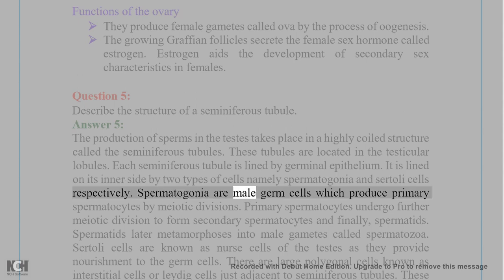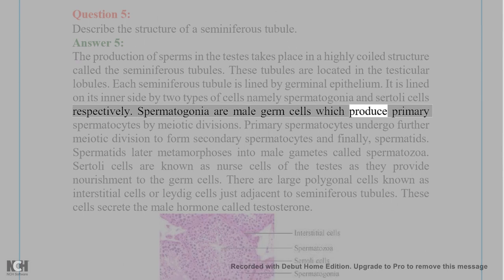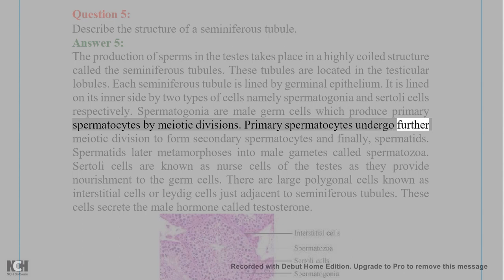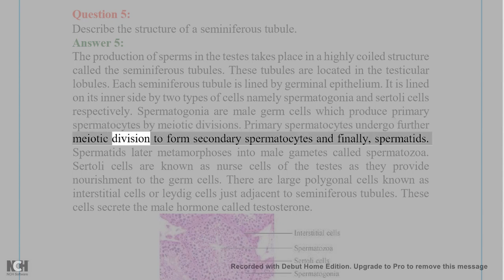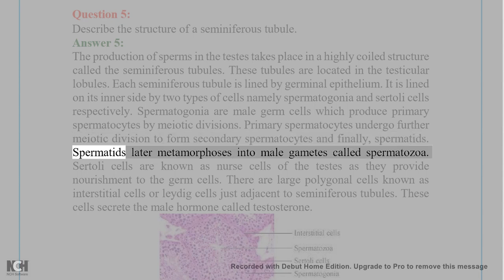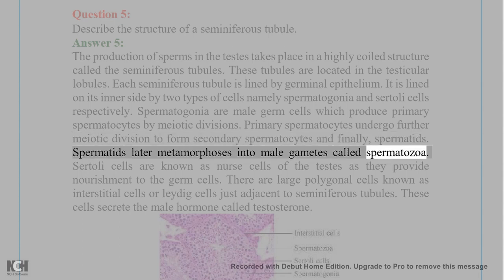Spermatogonia are male germ cells which produce primary spermatocytes by meiotic divisions. Primary spermatocytes undergo further meiotic division to form secondary spermatocytes and finally spermatids. Spermatids later metamorphose into male gametes called spermatozoa.